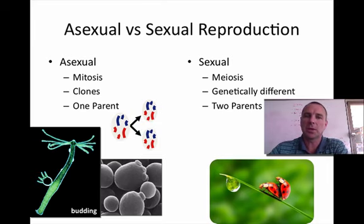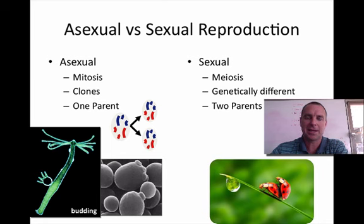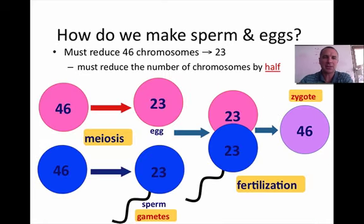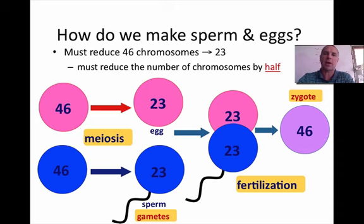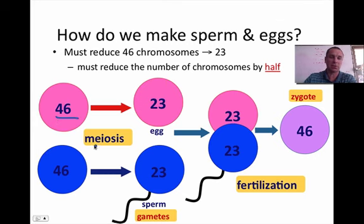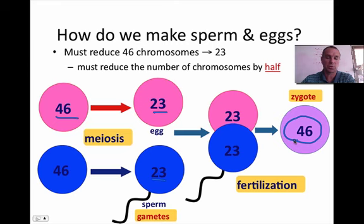That's asexual. Sexual reproduction deals with meiosis, and you get genetically different offspring because it's a combination of two parents' DNA. We know that in us we have 46 chromosomes, but we can't give all 46 to our children and have our spouse also give all 46 — that would end up with 92 chromosomes in our child. So our cells go through meiosis and create 23 in the eggs and 23 in the sperm cell. When these two unite through fertilization, we create what is called a zygote that has 46 chromosomes.